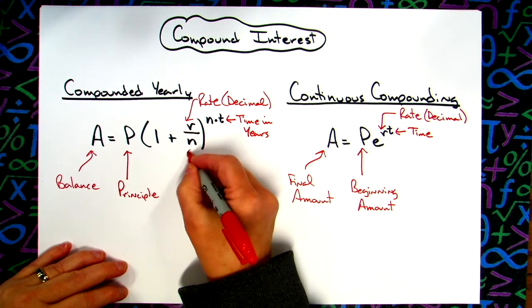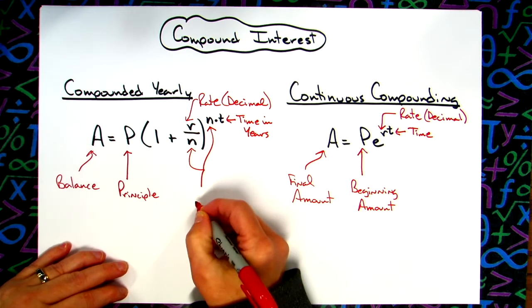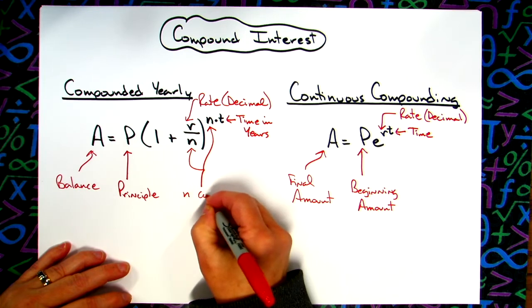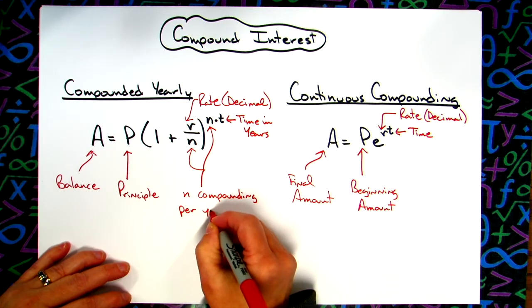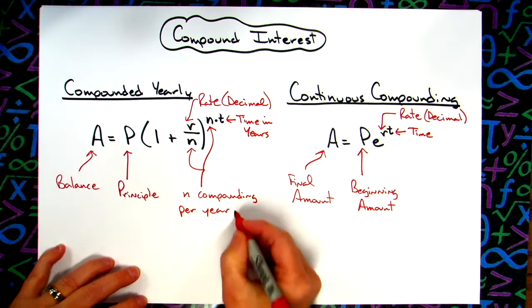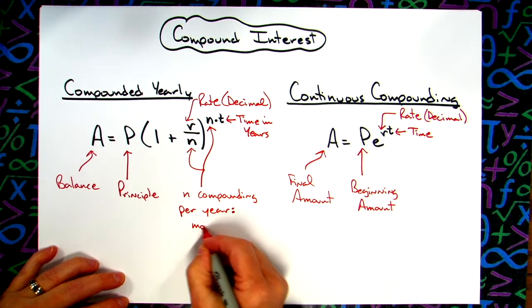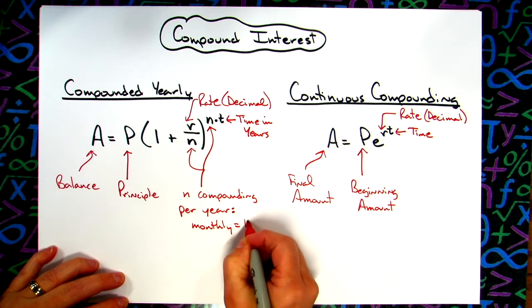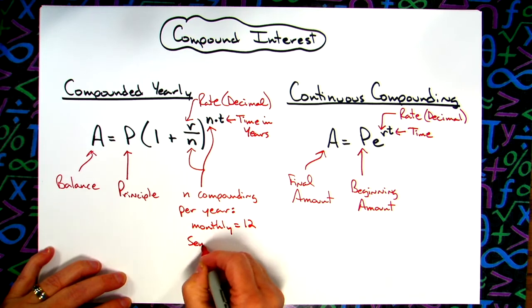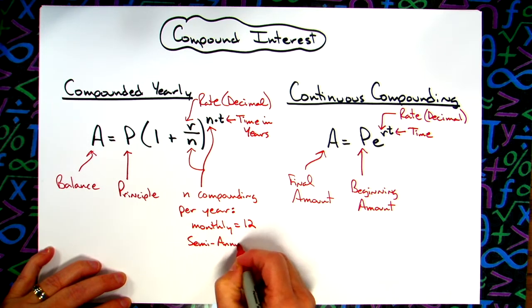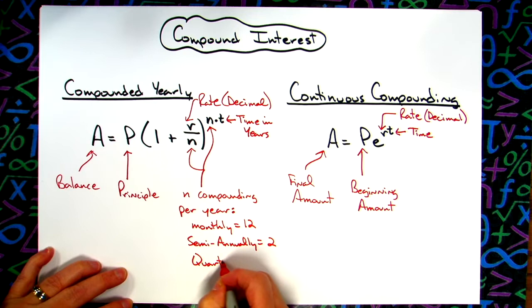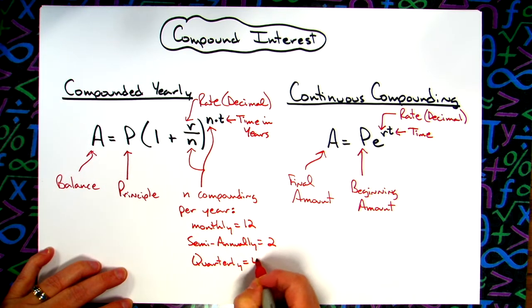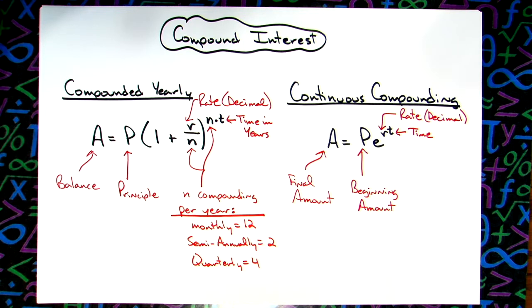This one has an added N, and the N is going to represent compoundings per year. Some examples: if it says it is compounded monthly, there are 12 months in a year so you're going to plug in a 12. If it says semi-annually, then you're going to put in a 2. If it is compounded quarterly, then you're going to put in 4.